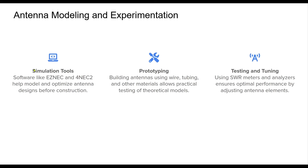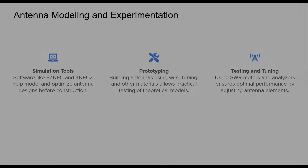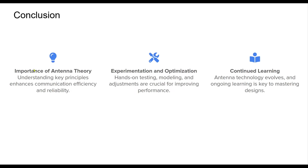Antenna modeling and experimentation are important for designing effective communication systems. Modern software tools like EZNEC and 4NEC2 allow amateurs and engineers to simulate radiation patterns, impedance matching, and efficiency before building physical antennas. Prototyping with common materials helps validate these models, and real-world testing with SWR meters or antenna analyzers ensures performance aligns with expectations. Iterative tuning and adjustments refine the design, leading to a highly optimized antenna system.